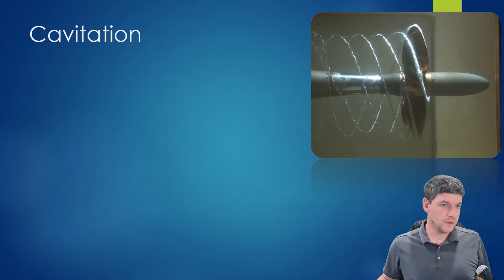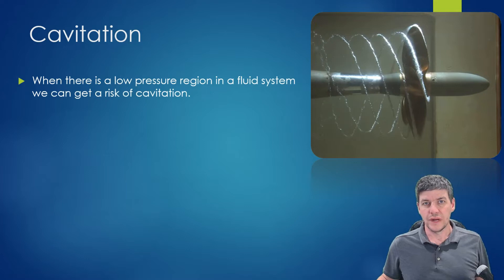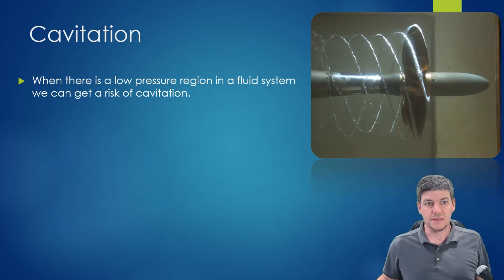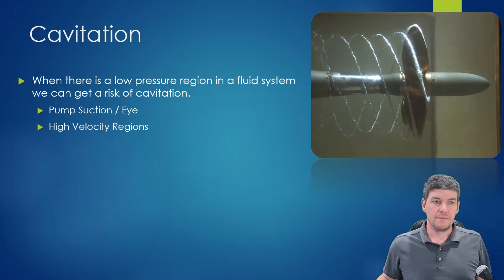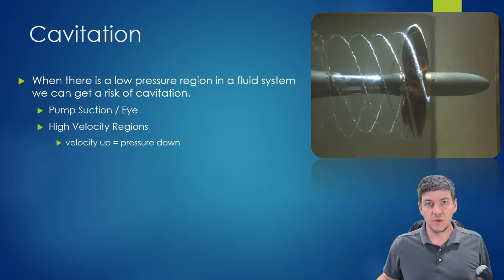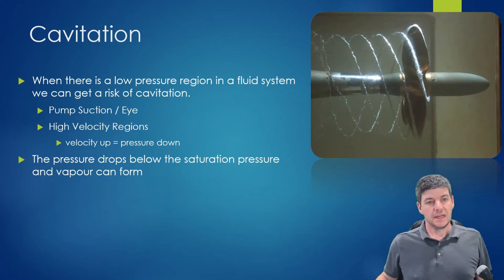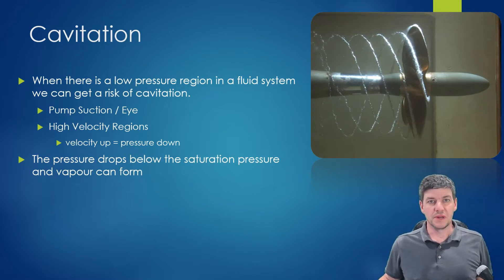Cavitation forms anywhere there is a very low pressure region where unexpected or unanticipated boiling occurs. In pumps, this happens on the suction side or right at the eye — the very center of the impeller — where pressures are lowest. High velocity regions also create low pressures, as described by Bernoulli's principle. Anytime pressure drops below the saturation pressure for the fluid's temperature, vapor can form, and that vapor causes cavitation.